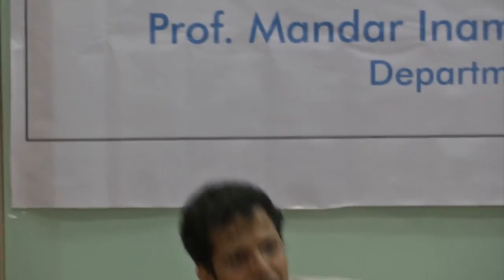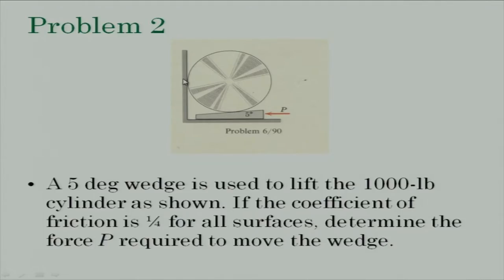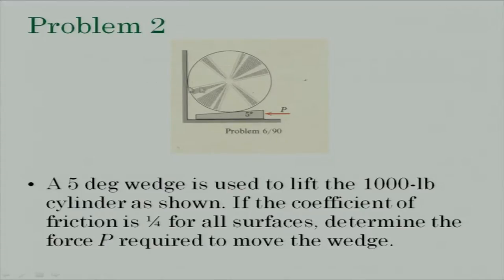Note one thing: even though there are combinations where slip can happen — here and here, here and bottom, here and bottom — the first assumption, that slip happens at both upper surfaces, is not possible because we want the wedge to go in. Just by having slip there simultaneously, it is not going to rotate. So this mode of impending motion where slip happens at the two cylinder-wall contacts is not valid — you can immediately throw that out.